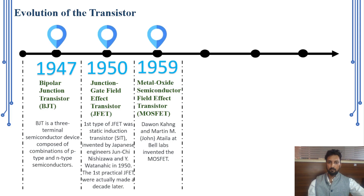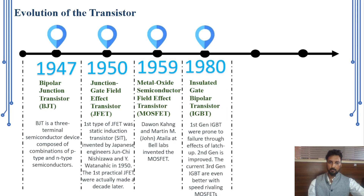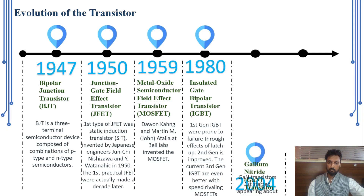The MOSFET is the major player in the field of VLSI. Apart from that, the IGBT — the Insulated Gate Bipolar Transistor — combines the benefits of BJT and the advantages of MOSFET into a single device. The first generation IGBT was prone to failure through latch-up current. The second generation was improved, and the third generation is even better in speed.